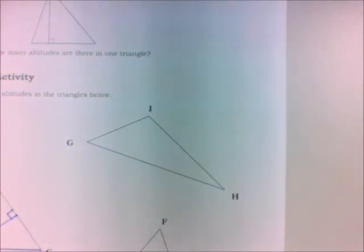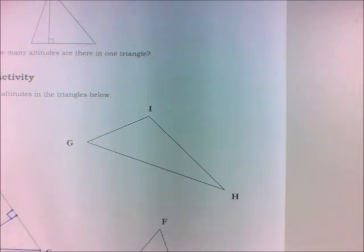Now we are going to create the altitudes of an obtuse triangle, triangle G-H-I. We're going to use the same strategy that we used with the acute and right triangles.